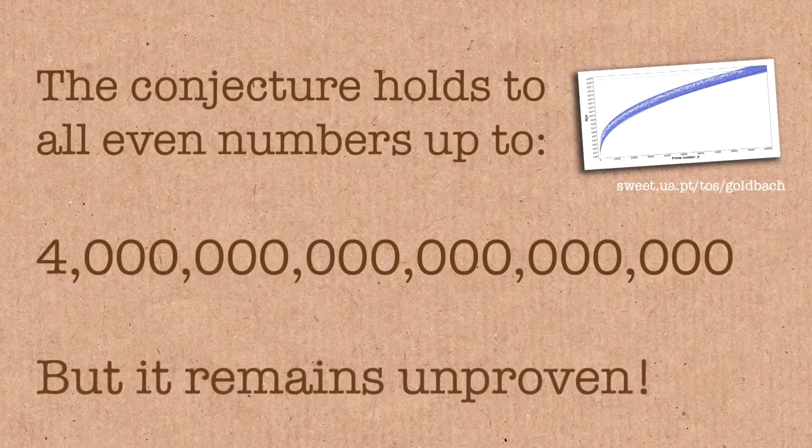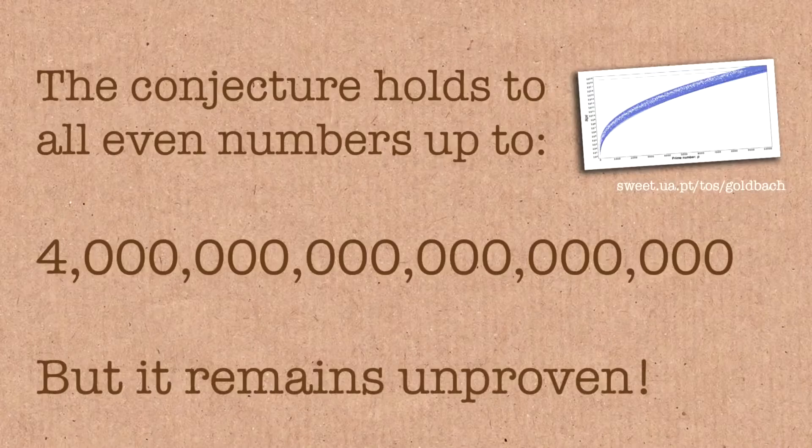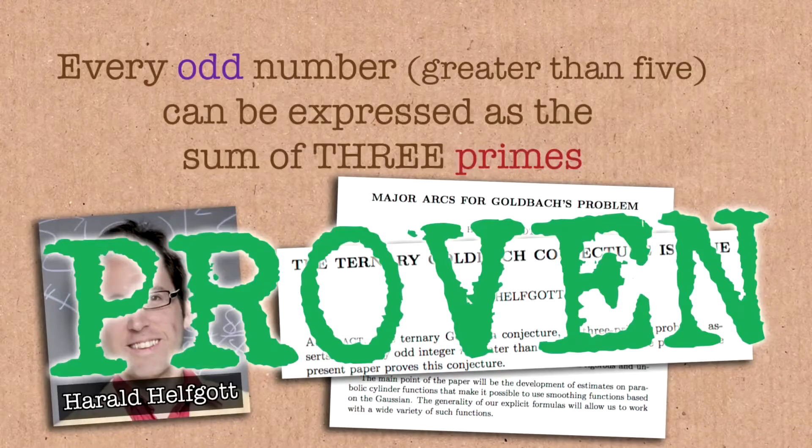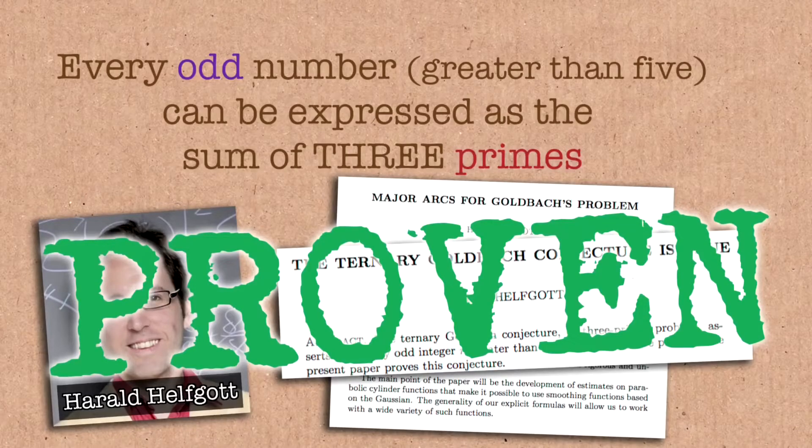So it remained unproven all this time. People have proven other things. People have made other conjectures around it. For example, Harold Helfgott, finally in 2013, managed to prove that every odd number is the sum of three primes. And that actually implies that every even number bigger than something is the sum of four primes. So you know, that's something.